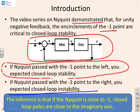What you get from that is that if the Nyquist is close to minus one, then you expect that the closed-loop poles are close to the imaginary axis. That's an obvious outcome of these two statements, because if the Nyquist has got the minus one point on the left you get one result, and if it's on the right you get the other. So as you pass from one to the other, the closed-loop poles are going from the left half-plane to the right half-plane.